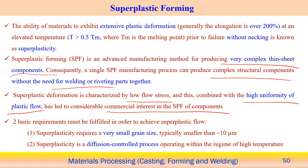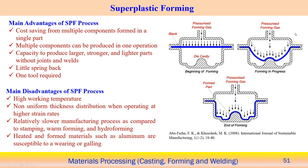Two basic requirements must be fulfilled to achieve superplastic flow. First, the material must have very small grain size, typically smaller than 10 micrometers. This is one requirement to perform superplastic forming. Second, superplasticity is a diffusion-controlled process operating within a range of very high temperatures. The deformation should happen slowly, not too fast, to allow diffusion to occur. That is why it is a diffusion-controlled process, and it works over a relatively high range of temperatures. These are the typical requirements to perform superplastic forming.